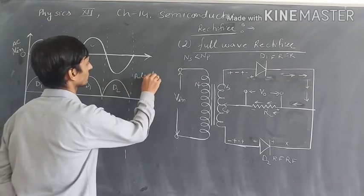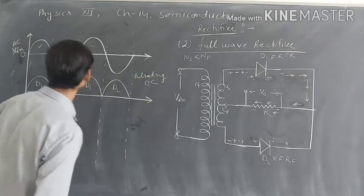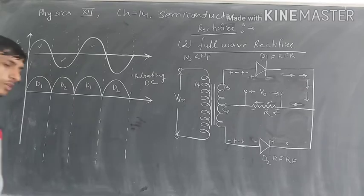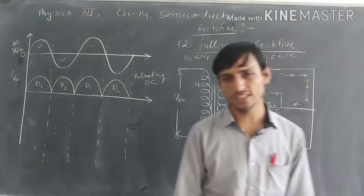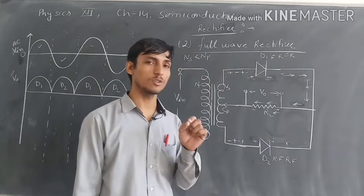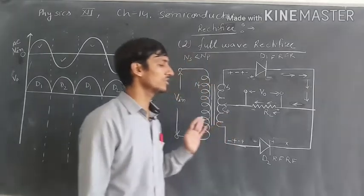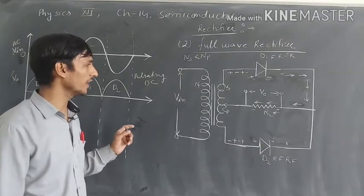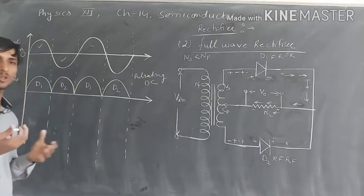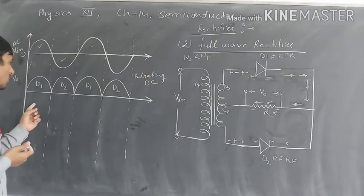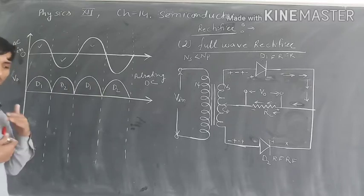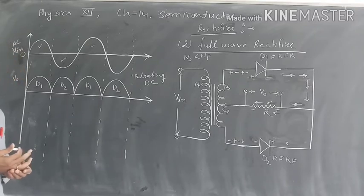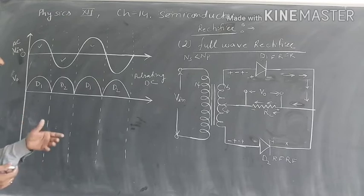Pulsating DC mein alternating se pulsating DC mein toh aa gayi, lekin aapko pata hai ki jo direct current hoti hai, woh exactly constant magnitude ki tarah honi chahiye. Toh aap yahan pe dekhoge ki koi aise process karein joh is pulsating DC ko lagatar ekdam bilkul smooth DC current mein change kar de — smooth DC voltage mein change kar de. Iske liye hamen ek filter lagana padega.